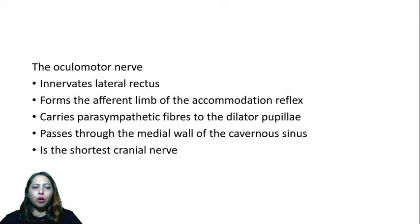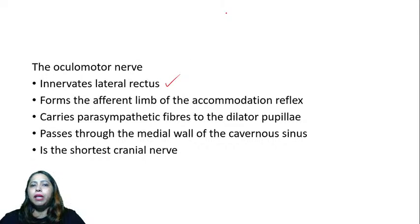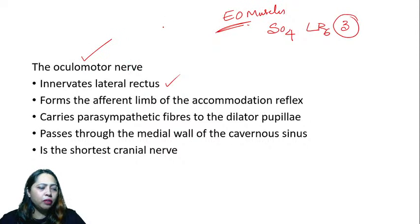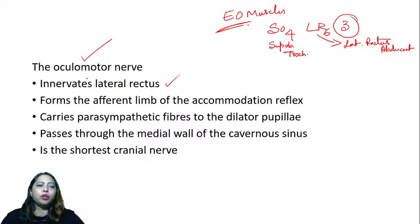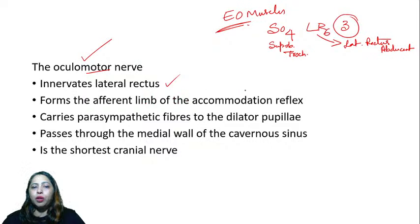Next question: the oculomotor nerve innervates which structures? The mnemonic is SO4, LR6, and the rest by 3. Superior oblique is supplied by cranial nerve 4 (trochlear); lateral rectus is supplied by cranial nerve 6 (abducent); and the third cranial nerve — oculomotor — innervates the remaining muscles. It does NOT innervate the lateral rectus, and it does NOT form the afferent limb of the accommodation reflex.